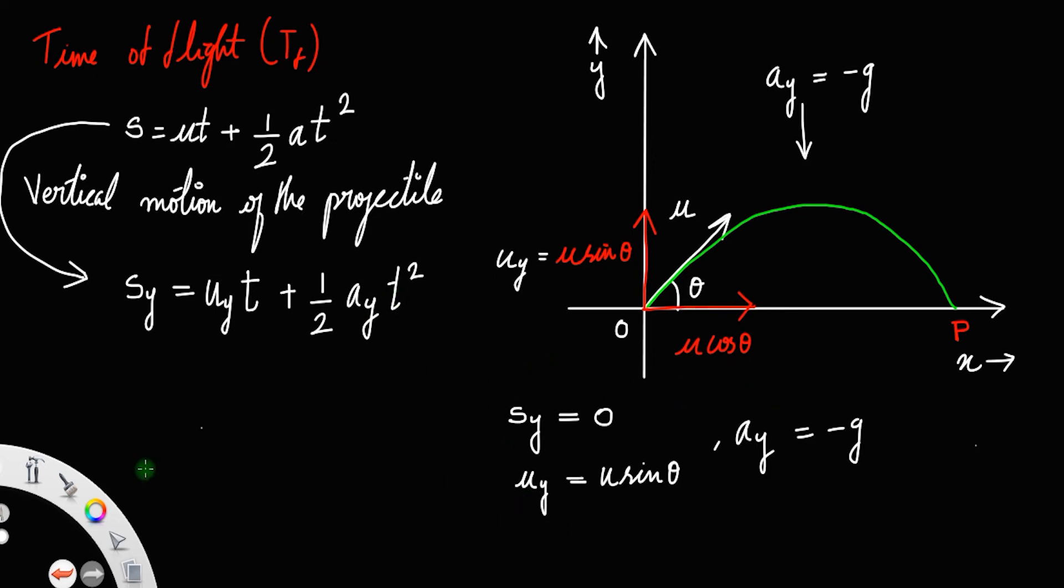Substitute all the values in here. This is equal to 0 equals u sin theta times t_f plus half into a_y is minus g times t_f squared.